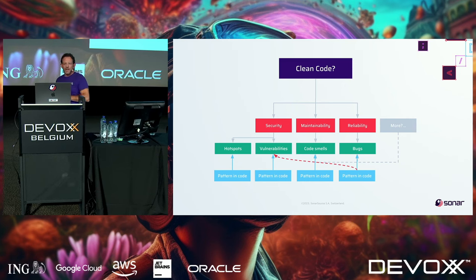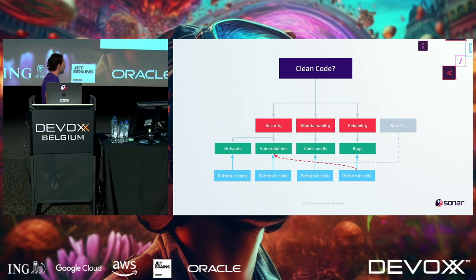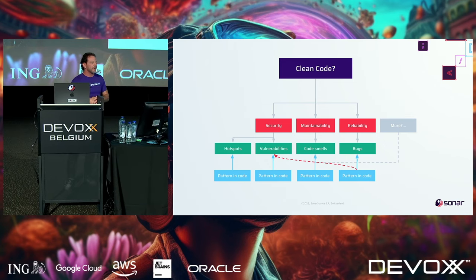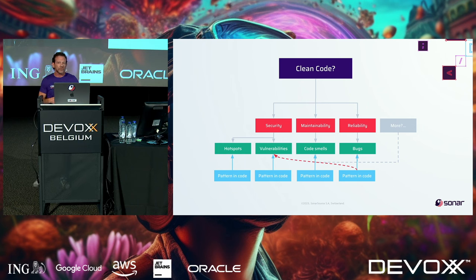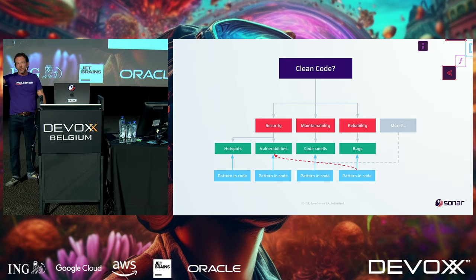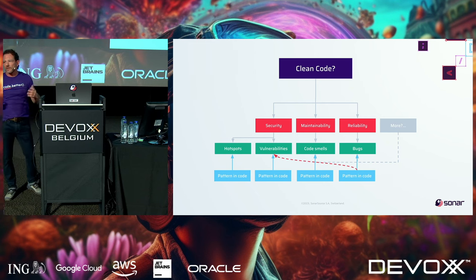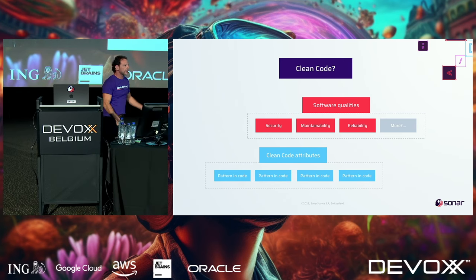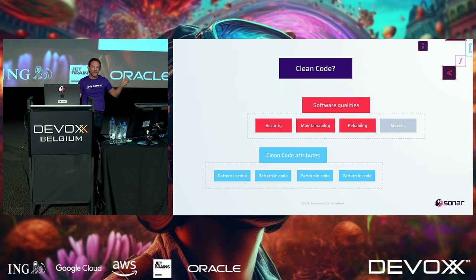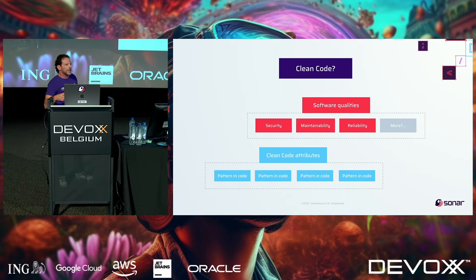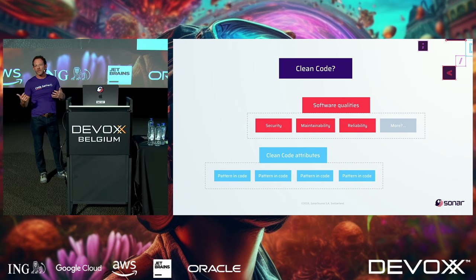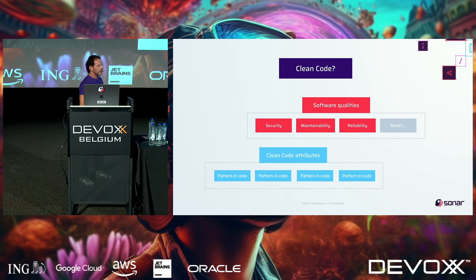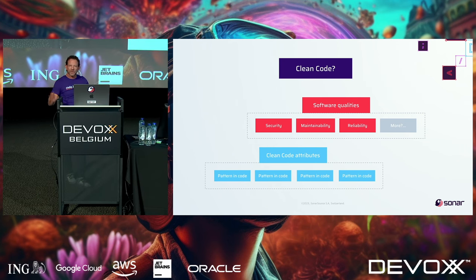We had bugs, code smells, vulnerabilities, and hotspots hierarchically. What we found is that this isn't a strict hierarchy — it's a multi-relational problem. A pattern in code can go up through bugs, but it's also a vulnerability. So where does it fit? We started dividing these out: software qualities — secure, maintainable, reliable — and then clean code attributes. What actually is clean code? What is good code, and how do you know the difference? These equate to patterns in your code.